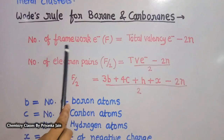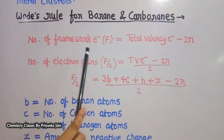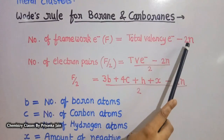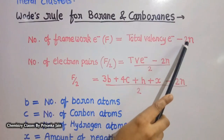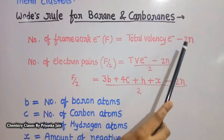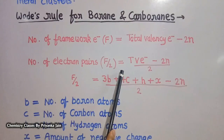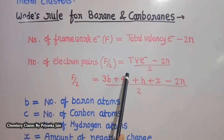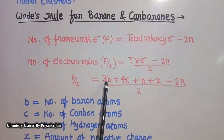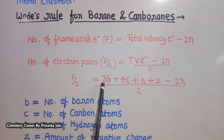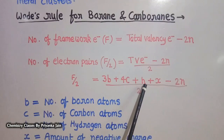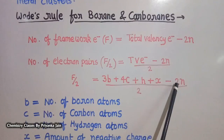The number of framework electrons, denoted by F, is given by the total valence electrons minus 2N, where N is the number of vertices — that is, the number of boron atoms plus carbon atoms. The number of electron pairs, F/2, is obtained by dividing F by 2. The total valence electrons are given by: 3B (boron atoms contribute 3 electrons) plus 4C (carbon atoms contribute 4 electrons) plus H (hydrogen contributes 1 electron) plus X (the negative charge), minus 2N, all divided by 2.